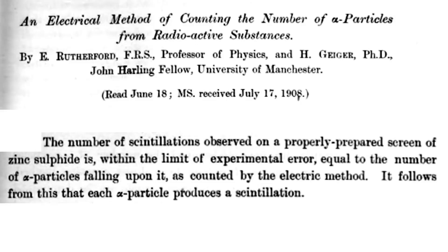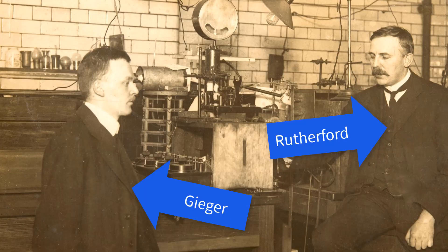By July of 1908, Rutherford and Geiger published that, quote, The number of scintillations is within the limit of experimental error equal to the number of alpha particles falling upon it, as counted by the electric method. Around the same time as their electrical experiments, Geiger was also studying the number of alpha particles that were emitted by a substance by scintillation. When he noticed that the alpha particles were a little bit scattered by air, Geiger remarked upon it to Rutherford, and Rutherford remembered his experiment with mica screen. He then told Geiger to redo the experiment with the scintillation method.